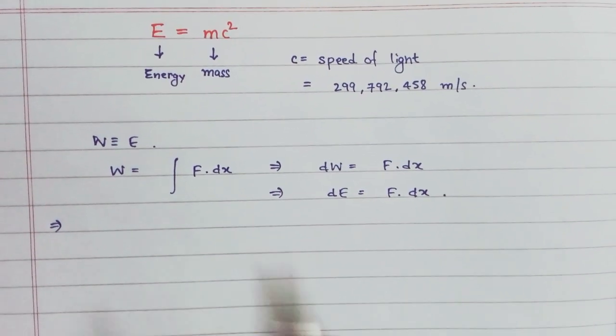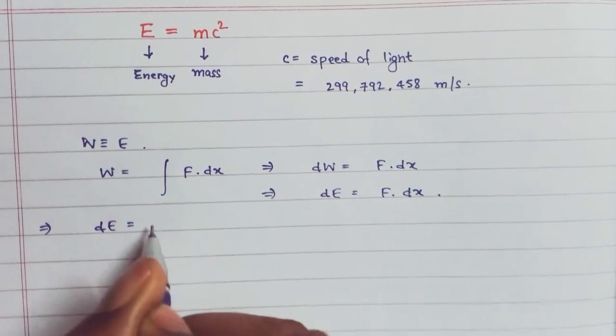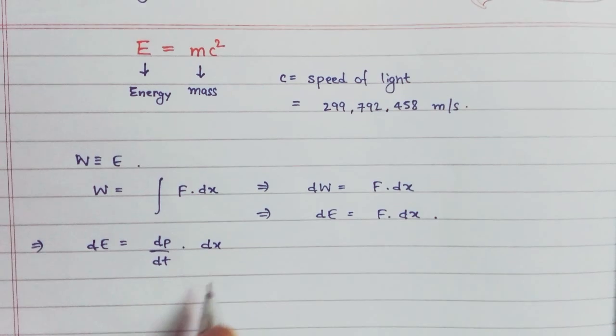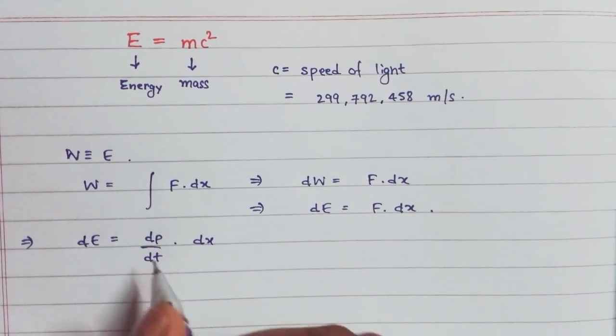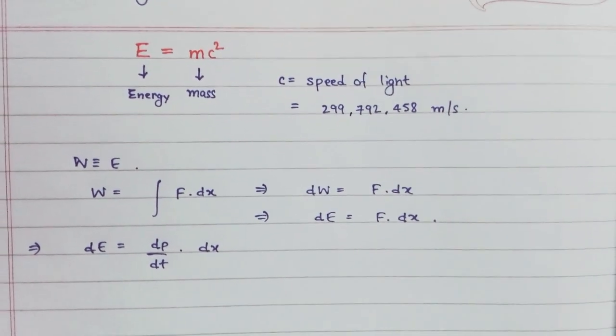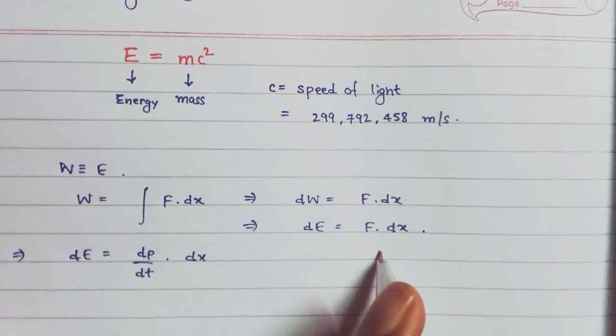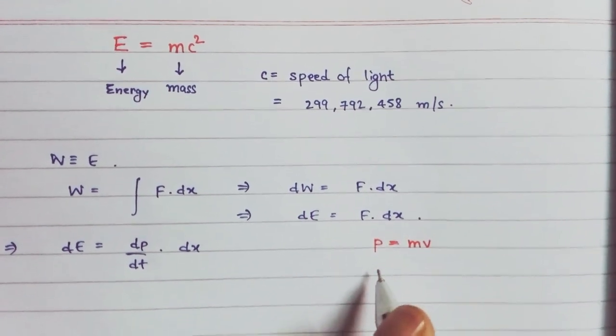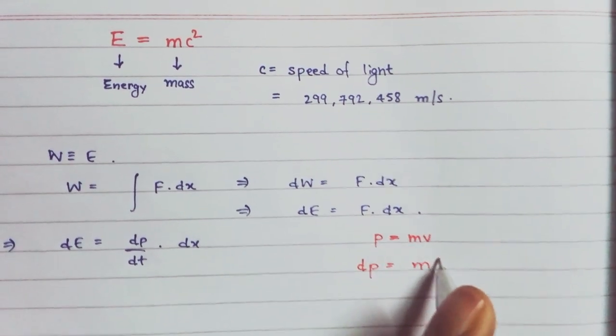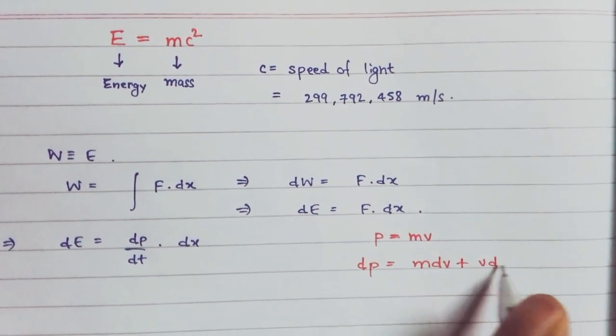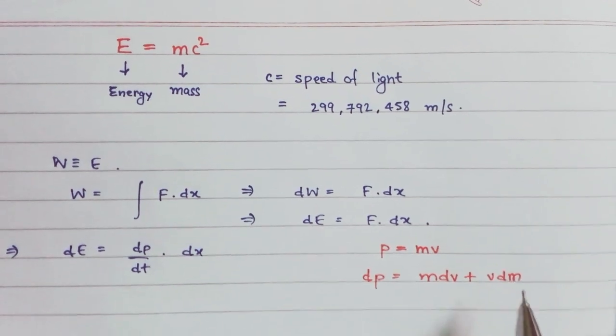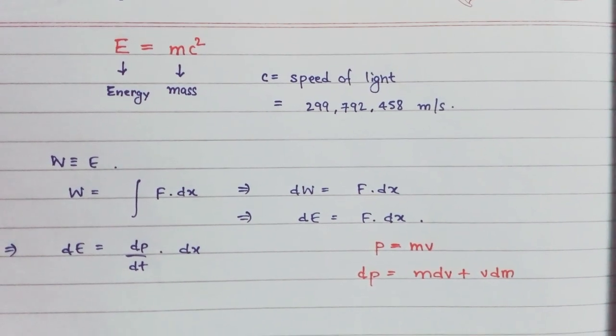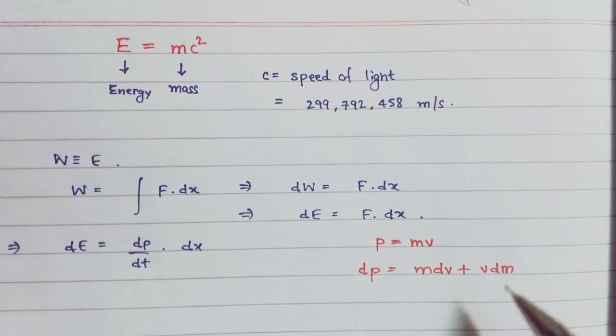By Newton's second law of motion, force is the rate of change in momentum, so dE equals dP by dt times dx. What's dP? P is the linear momentum, so P equals MV, and therefore dP equals mdv plus vdm. Now dm is not zero because when masses travel at velocities comparable to the speed of light, the mass is no longer constant.